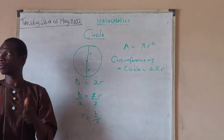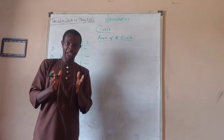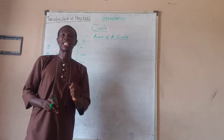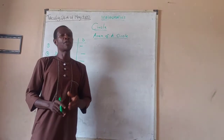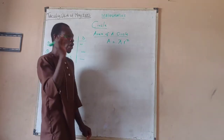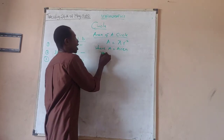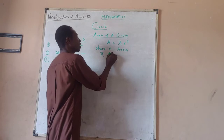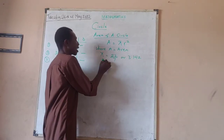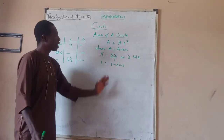On area of a cycle, remember the relationship between a radius and a diameter: a diameter is 2 times the radius and a radius is half of a diameter. From our formula for area of a cycle, area equals pi r squared, where A stands for the area, pi is a constant — normally we use 22 over 7 or 3.142 — and r is the radius. This is the formula for area of a cycle.